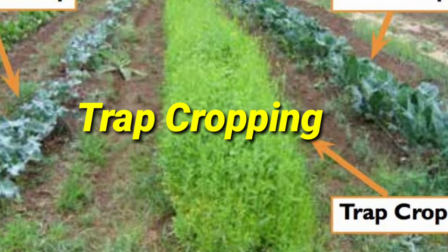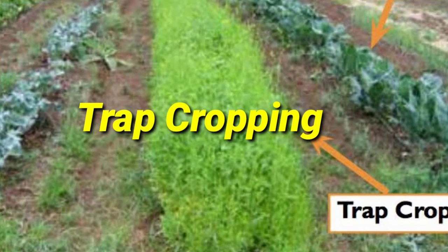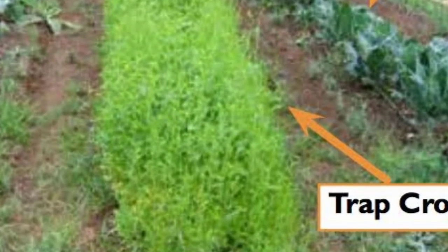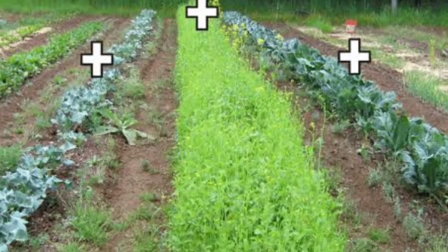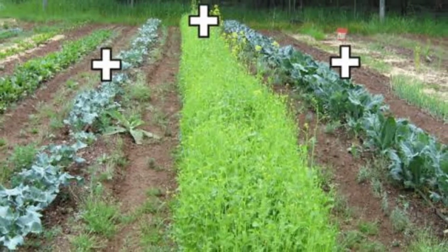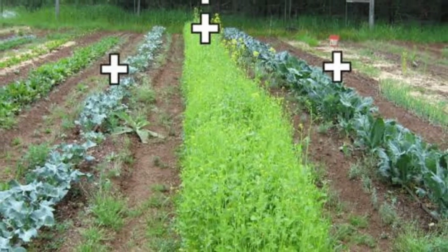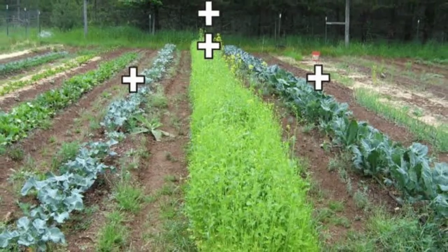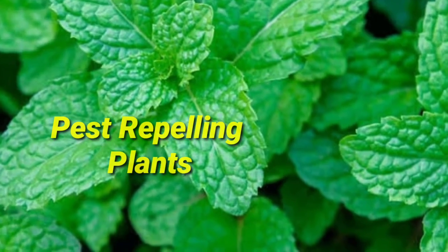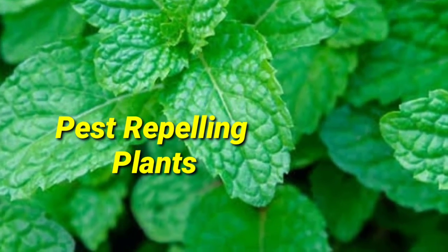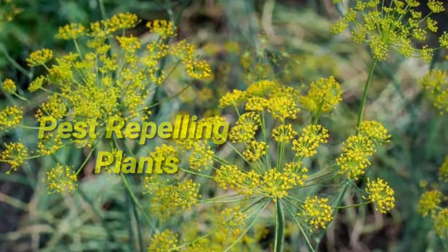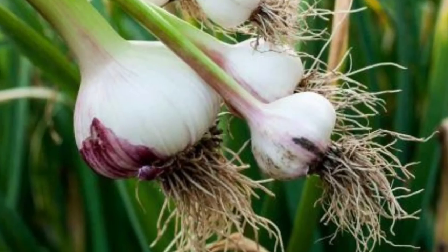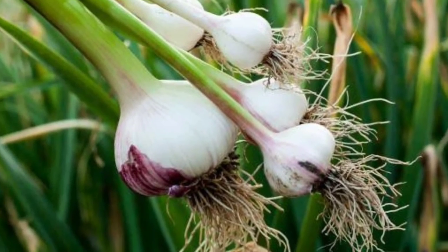Examples of trap cropping are mixing of plants like chili plant with coriander or cabbage plant with mustard. You can also use pest-repelling plants like peppermint, fennel, clove, ginger and garlic.